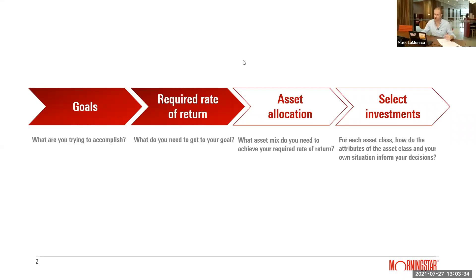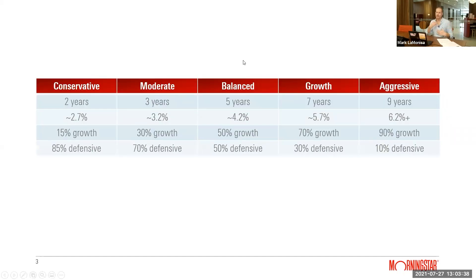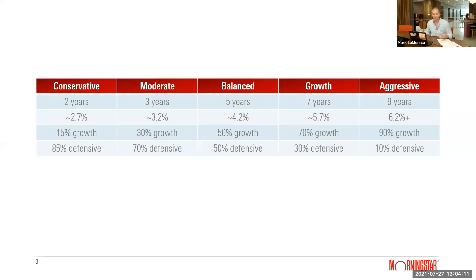Asset allocation is how you distribute your investments between different asset classes. At a very high level, that's growth assets and defensive assets. Growth assets are things like shares and listed property. Defensive assets are things like fixed interest and cash. We went through those first two steps and now we're covering asset allocation.